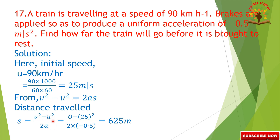Substituting values: V is equal to 0 since the train comes to rest. So S equals 0 minus 25 squared, divided by 2 into minus 0.5. That gives minus 625 divided by minus 1, so the distance travelled S equals 625 meters.